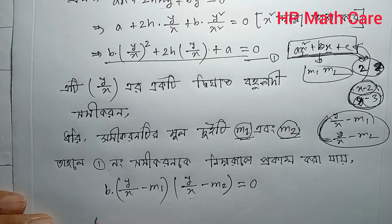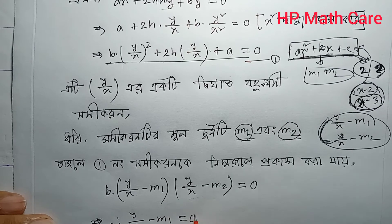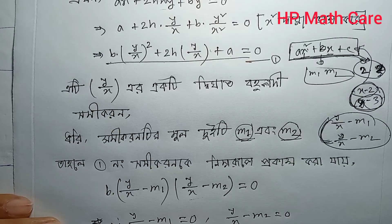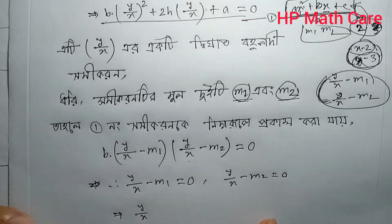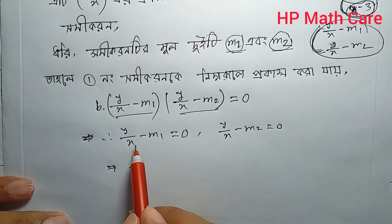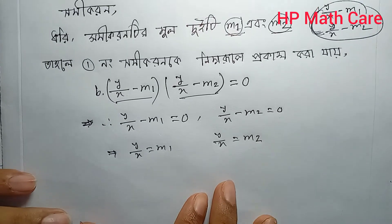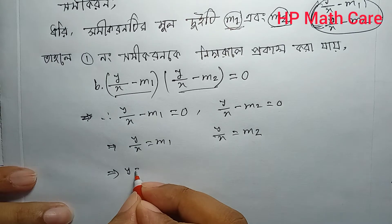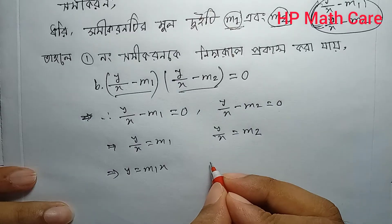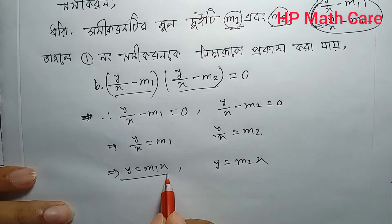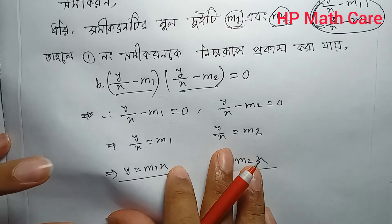Equal to zero. We can collect: y/x − m1 = 0 gives y = m1·x, and y/x − m2 = 0 gives y = m2·x. So the two lines are y = m1·x and y = m2·x. This is the key result for the pair of lines through the origin.